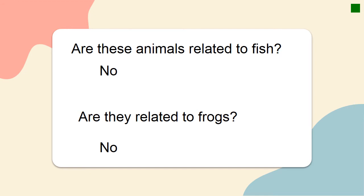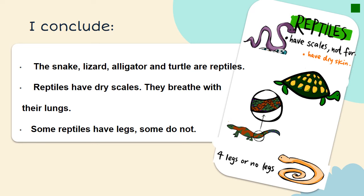Are these animals related to fish? No. Are they related to frogs? No. You have to know that the snake, lizard, alligator, and turtle are reptiles. Reptiles have dry scales, they breathe with their lungs, and some reptiles have legs while some do not. For example, the snake has no legs, while the turtle has four legs and a shell.